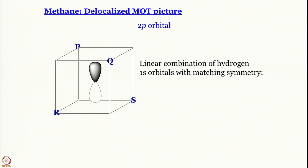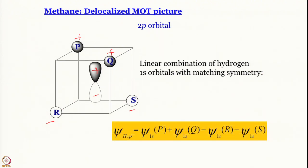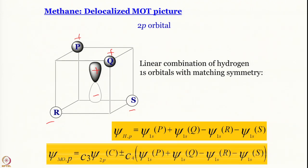What about the p orbital? Which linear combination of hydrogen orbitals will have matching symmetry with, say, the pz orbital — which has a positive lobe and a negative lobe? If I want matching symmetry, then p should be plus, q should be plus, r should be minus, and s should be minus. So the SALC for pz is ψ₁ₛ(p) + ψ₁ₛ(q) − ψ₁ₛ(r) − ψ₁ₛ(s). Filled circles represent plus and empty circles represent minus. Taking a plus combination gives a bonding orbital; minus gives antibonding.